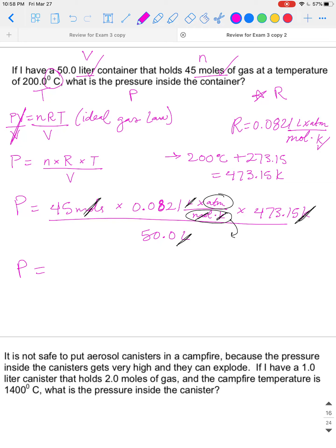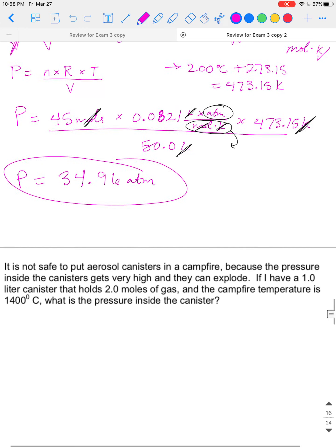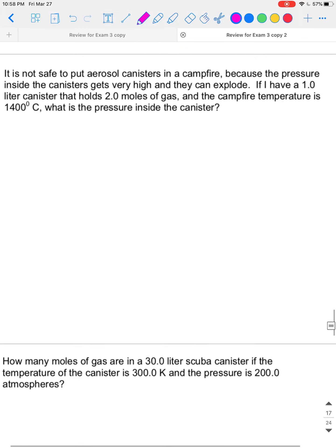So pressure equals, now we will plug all this in. 45 times 0.0821 times 473.15, and we're going to divide that by 50. Pressure is 34.96 ATM. And that is our answer. That is the end of that problem. Moving on.